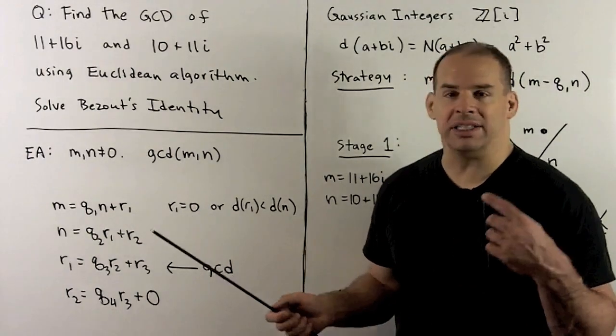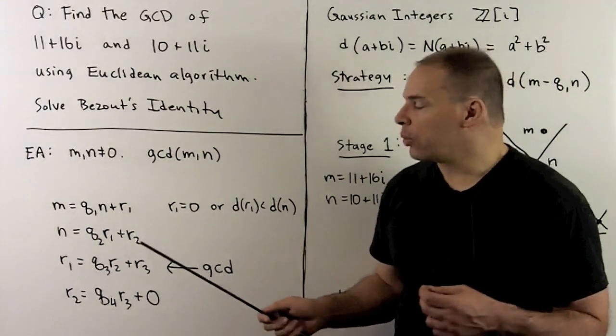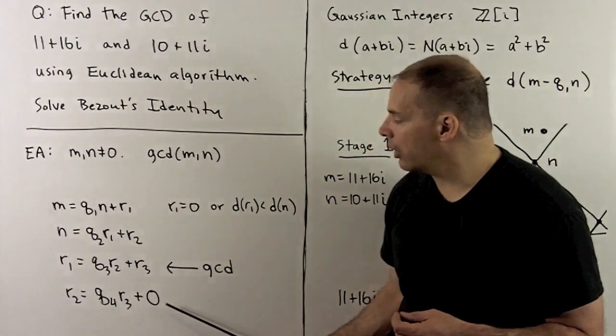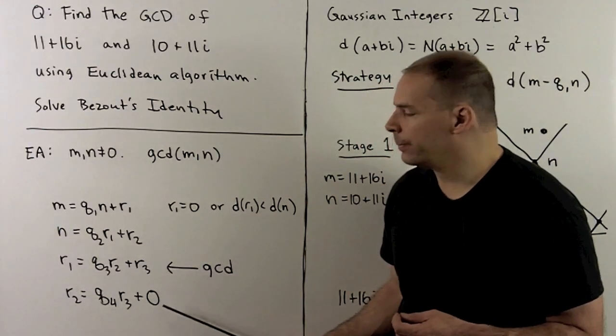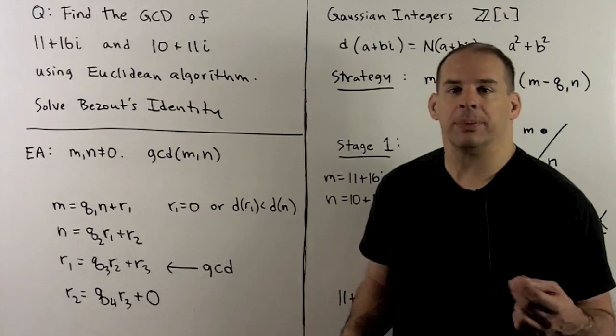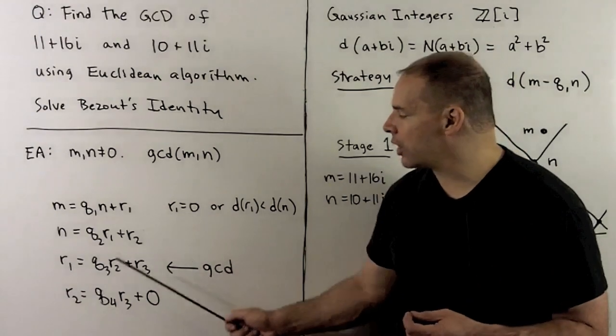Because d is strictly decreasing on the r's, we're eventually going to force out an equation with a zero. And that's where we stop. Then the answer, the greatest common divisor, is the last r that we solve for.